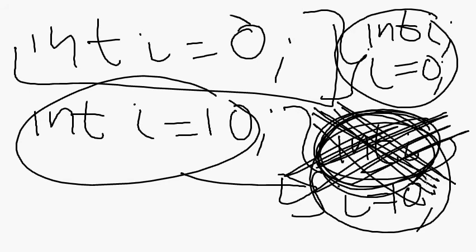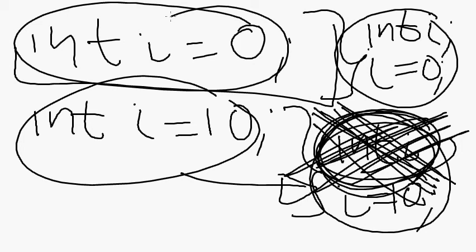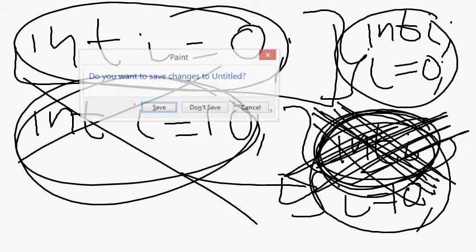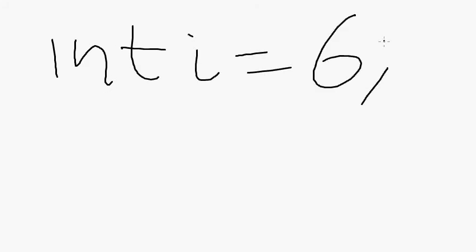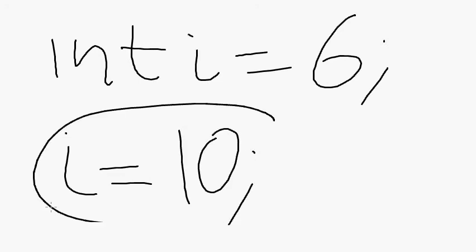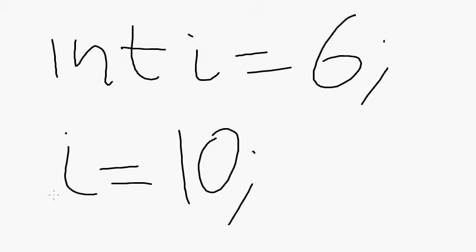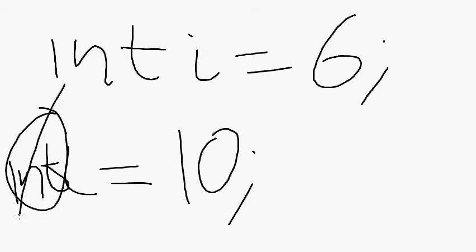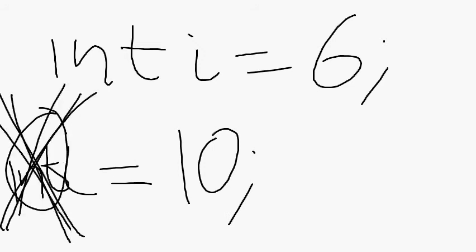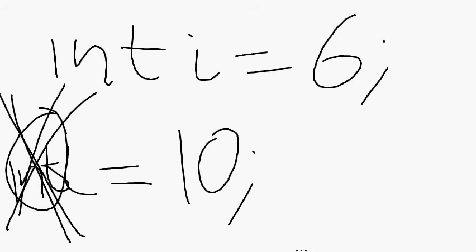If you already did 'int i = 0' up there and you want to change the value of i, you do not re-declare it. If you did 'int i = 6' and you want to change the value of i later on, you just do 'i = 10' or whatever value you want to give it. You cannot say 'int i' again because you already declared it. 'int i = something' is a compound statement summarizing declaration and assignment, and you don't want to declare something you've already declared.